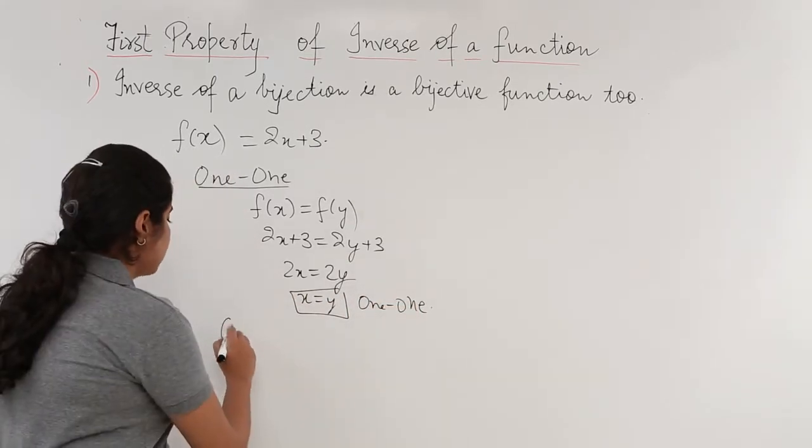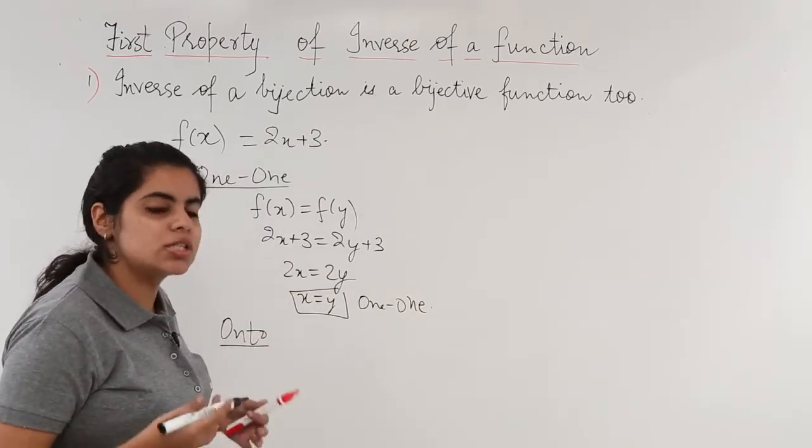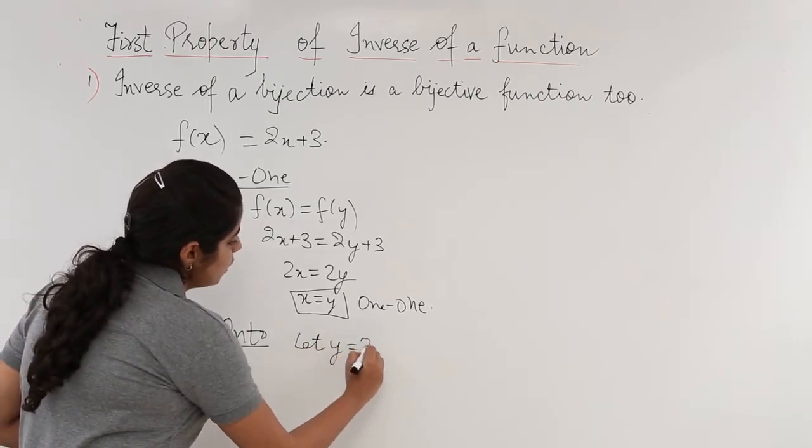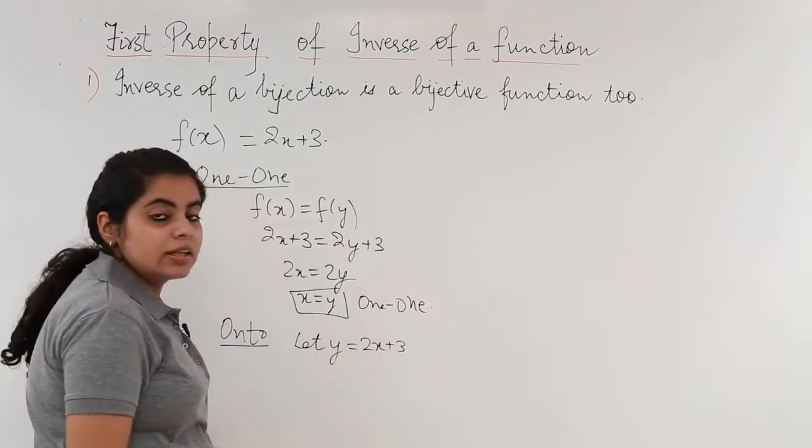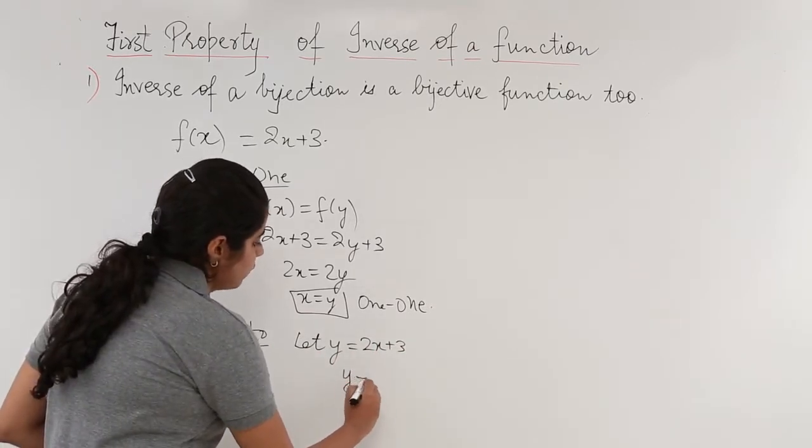Now what we needed to check: we needed to check whether it is onto or not. We put the heading as onto. This is all the story we've already done. I write: let y is equal to 2x plus 3. Then what do I do? I actually find the value of x.